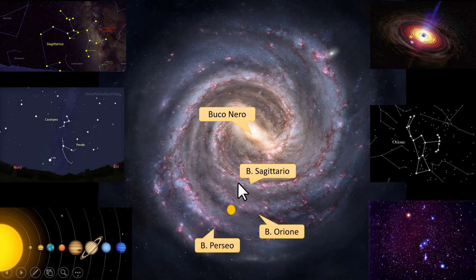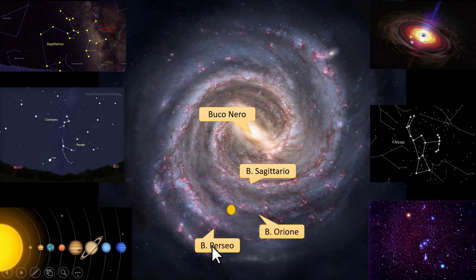As you can see, if we look into the interior of the galaxy, we see the Via Lattea. The constellation of Sagittarius, which gives its name to the arm, we see it right in the direction of the galactic nucleus, while the constellation of Perseus, which gives its name to the Perseus arm, we see it on the opposite side of the Via Lattea, therefore in the least bright area of the sky.